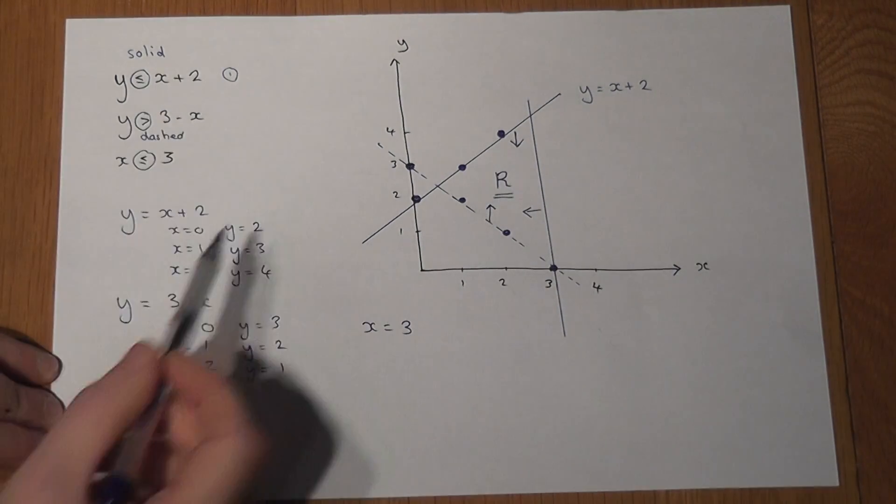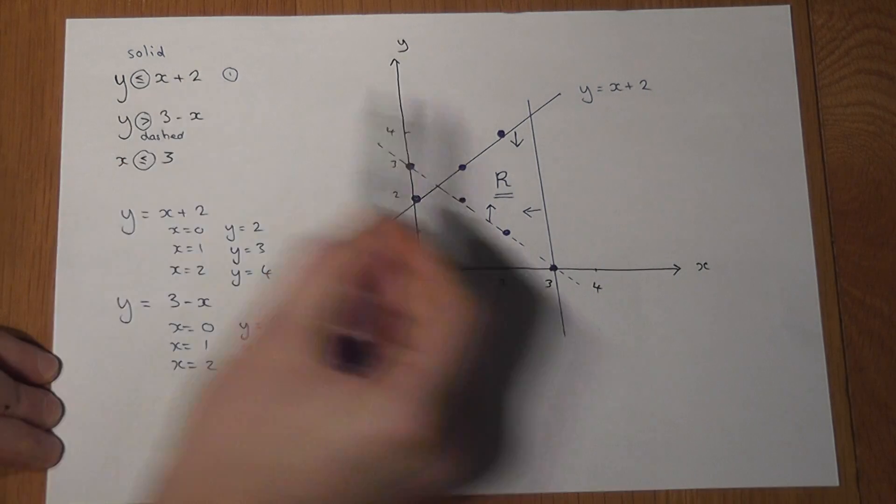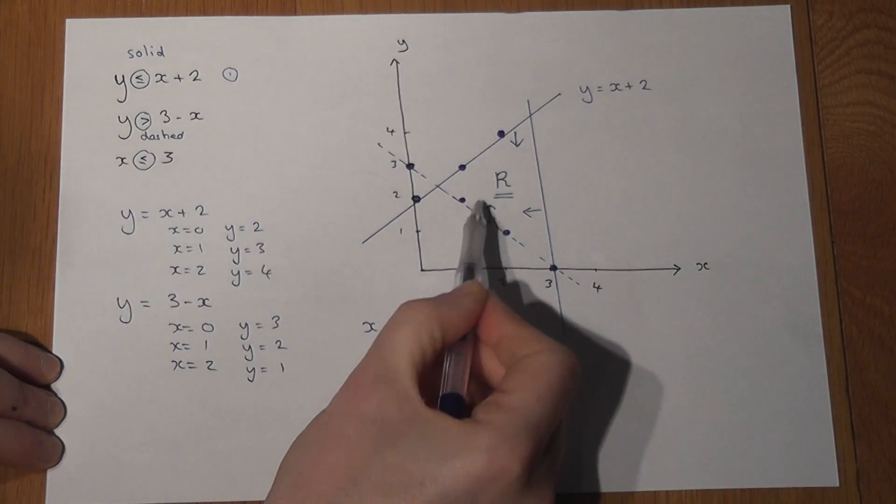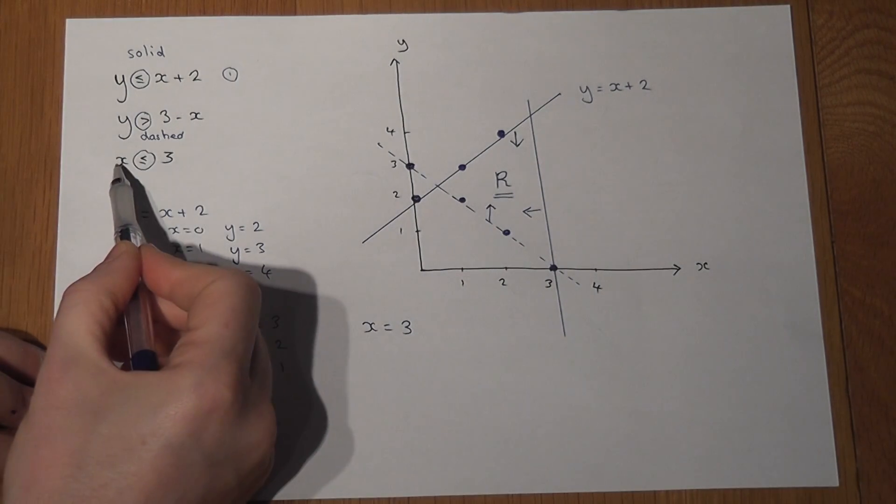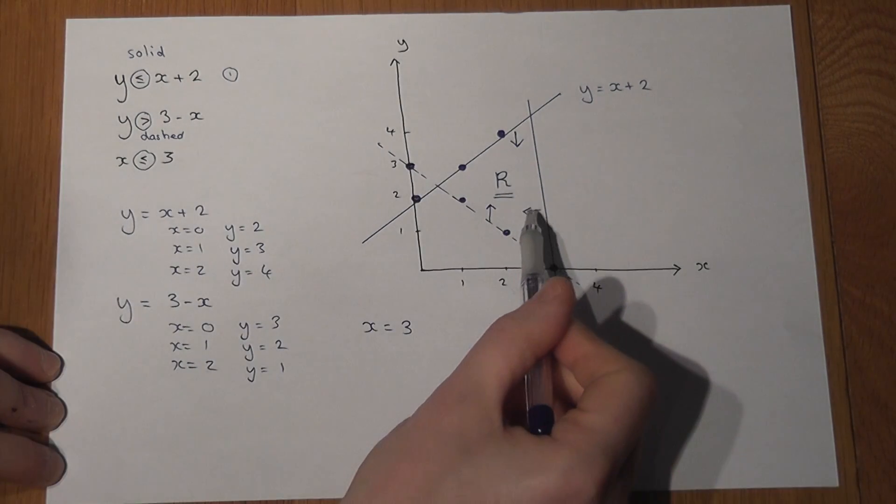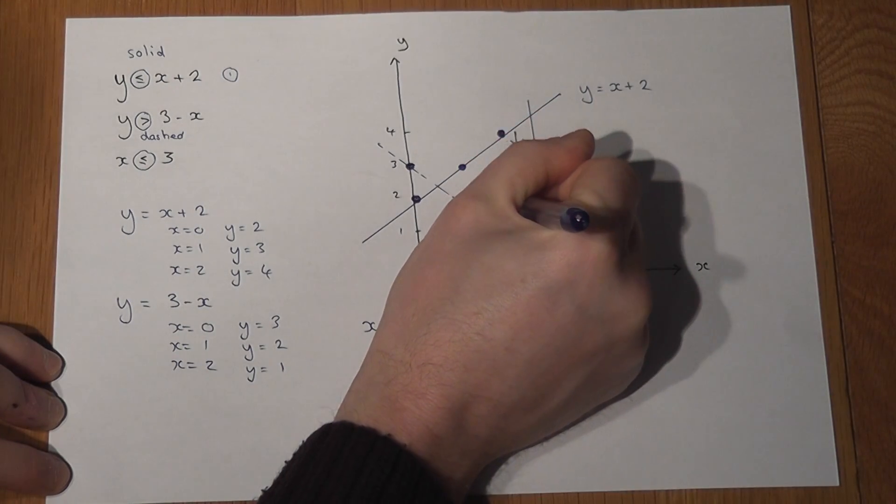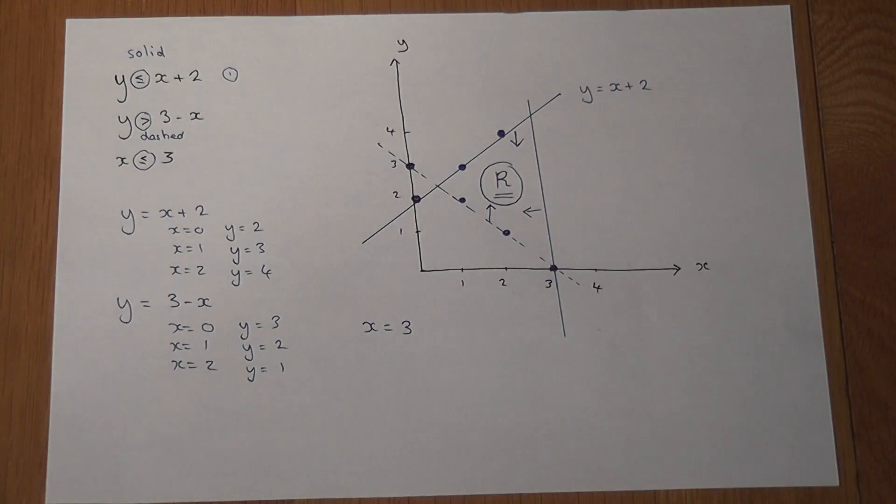And again for the inequality bit, y less means below the line, y more means above the line. And in this one x was less than 3, so therefore we go to the left of the line. And this is my central enclosed region.